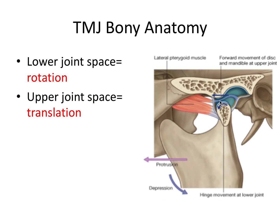The articular disc separates the joint space into two separate compartments. The lower joint space is involved with rotation — this is where the condyle rotates during hinge movement as the lower jaw goes from closed to about halfway open. The upper compartment is involved with translation, where the condyle slides down and forward along the articular eminence during maximum opening, protrusive, or lateral excursive movements. Knowing this rotation-lower, translation-upper distinction is worth at least a question or two on the board exam.